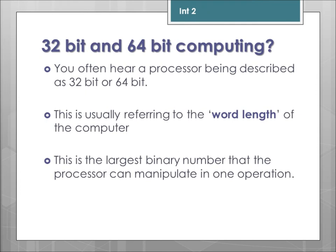If you ever hear a computer referred to as a 32-bit computer or a 64-bit computer, this usually refers to what's known as the word length. The word length is the largest binary number that the processor can deal with in a single operation. Most machines these days have 64-bit processors coupled with a 64-bit operating system, meaning it can use more memory and deal with bigger numbers in a single operation, which usually means it should be a more efficient machine.